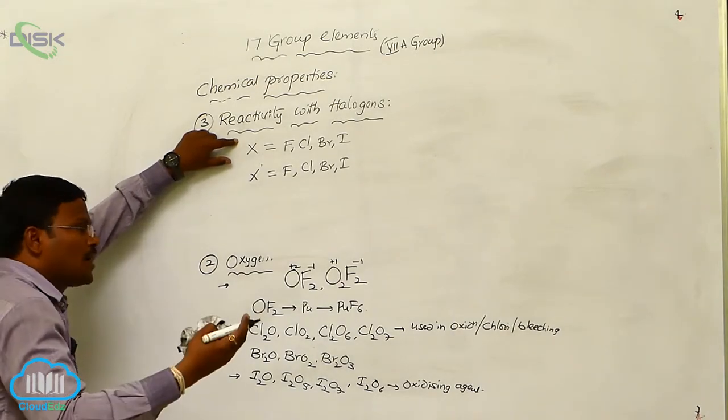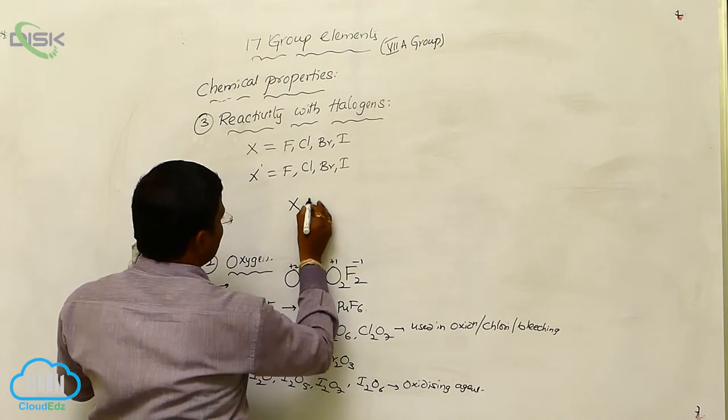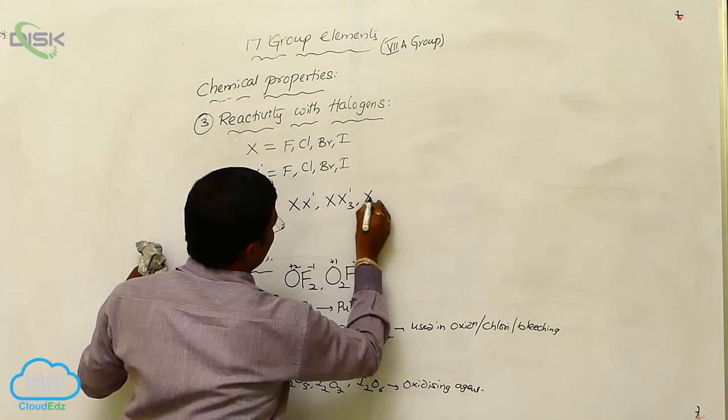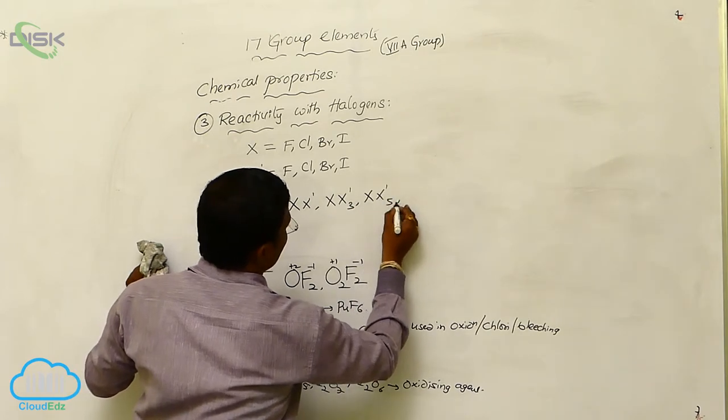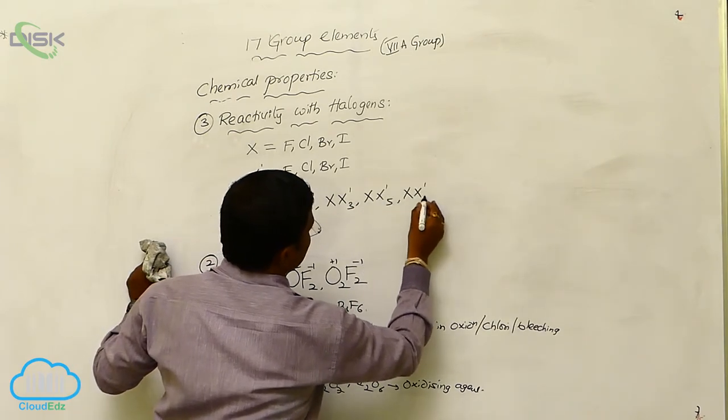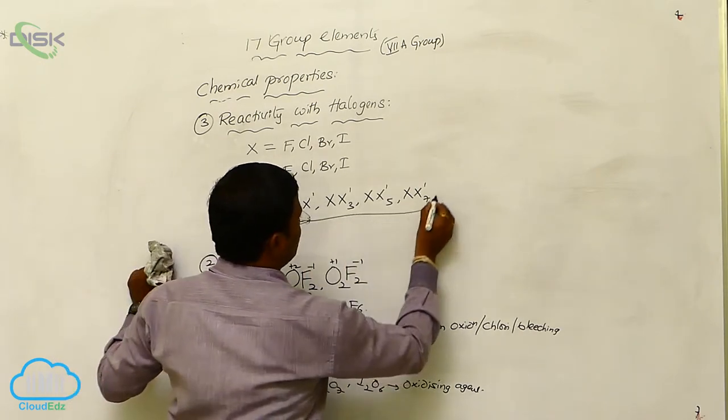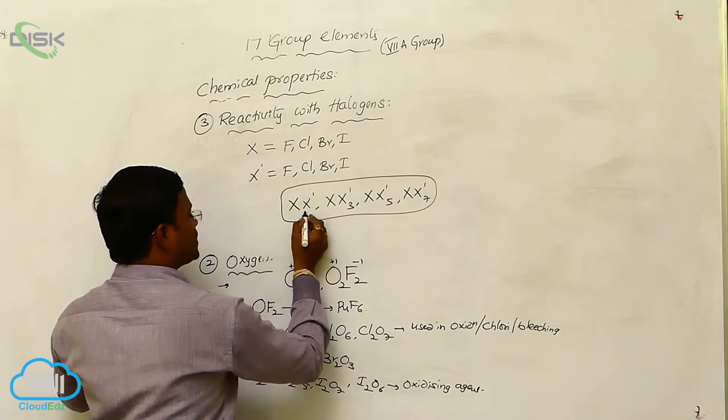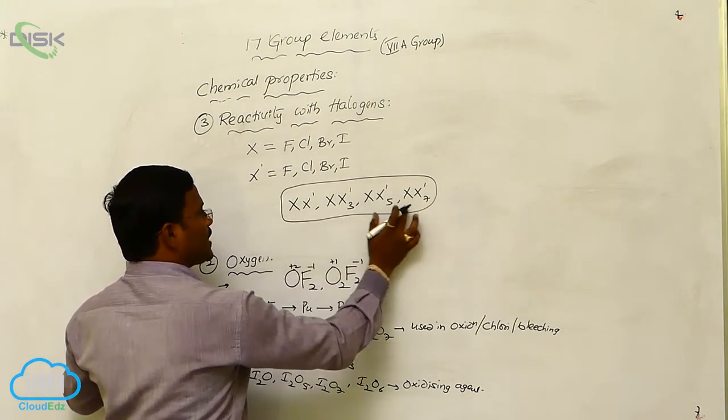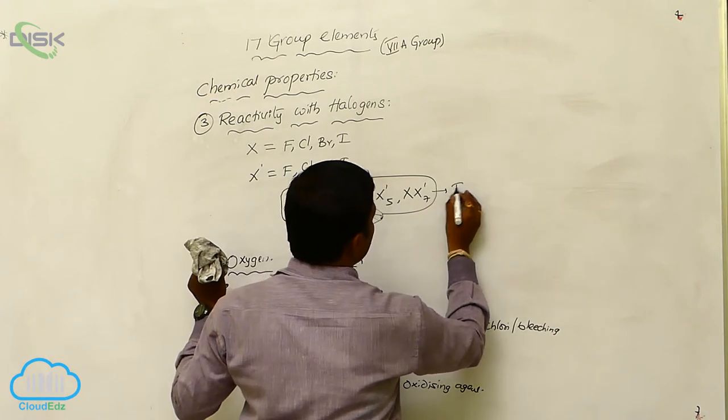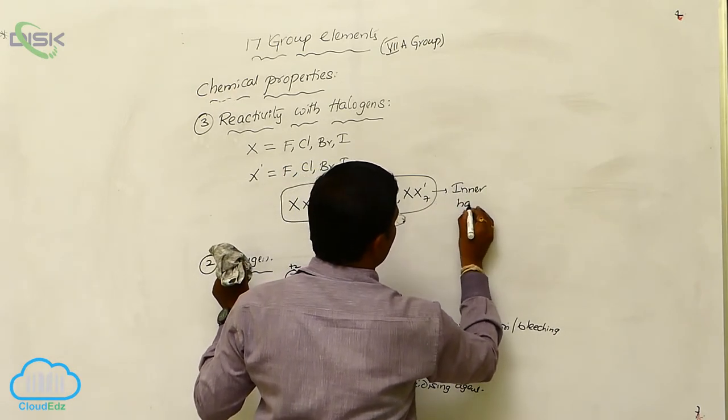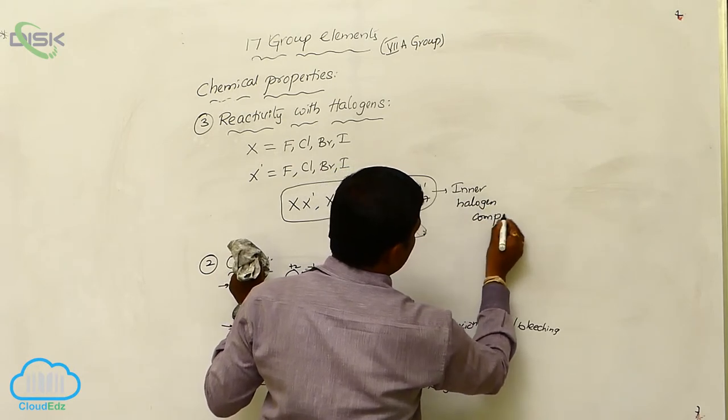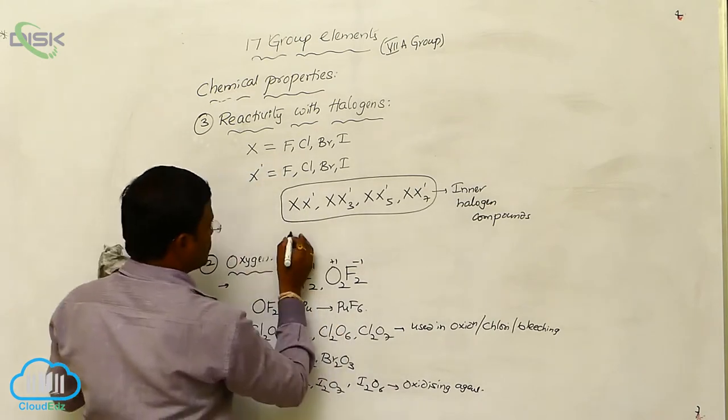To produce XX', XX'3, XX'5, XX'7 type of compounds. These compounds are called, one halogen atom reacted with another halogen atom to produce four types of halogen compounds. They are called interhalogen compounds.